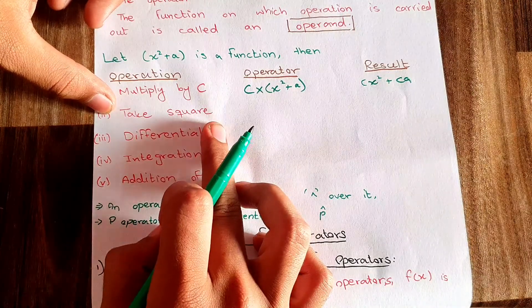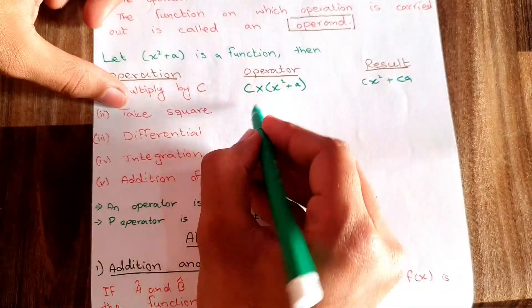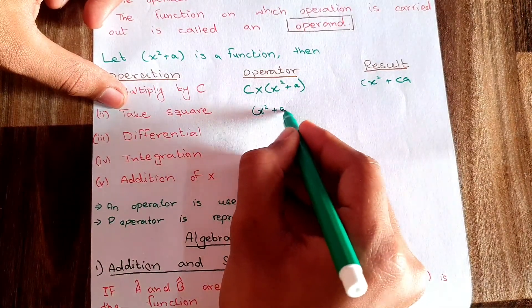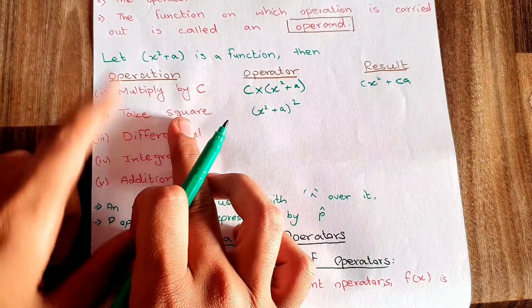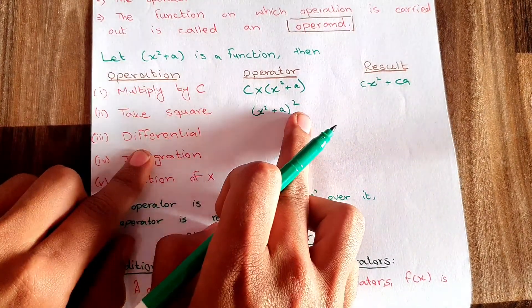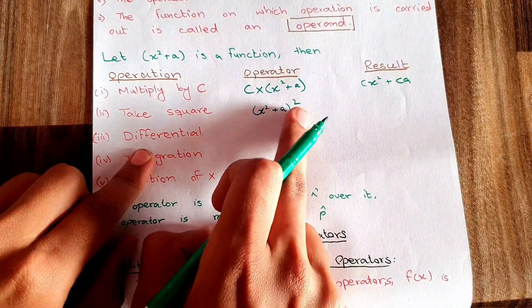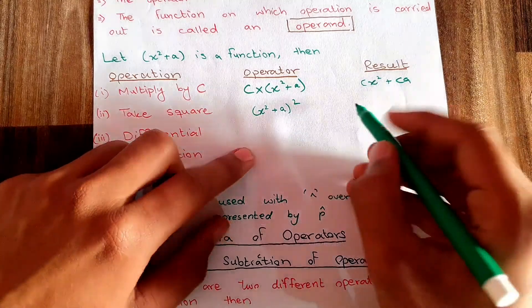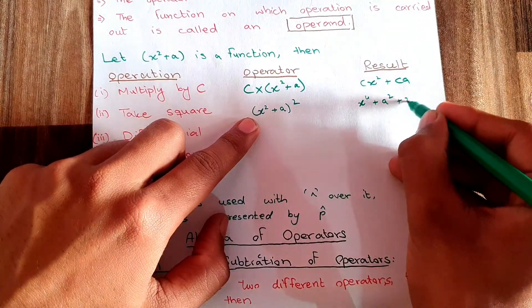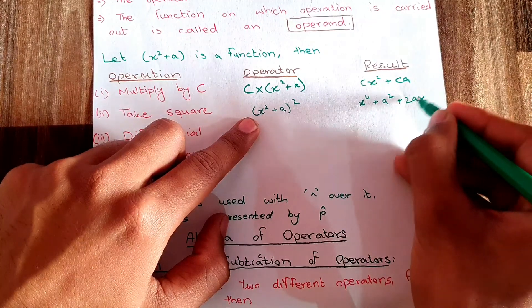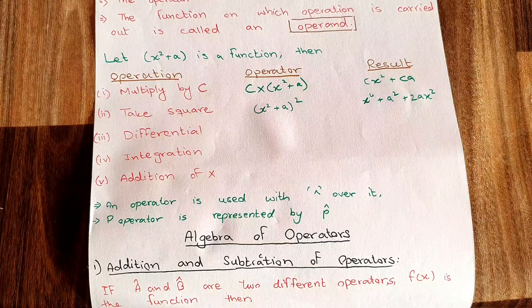The next operation is to take the square of the function. So the operator is 'square,' applied on x² + a. The answer comes out to be x⁴ + a² + 2x²a. So this is the result for the square operator.